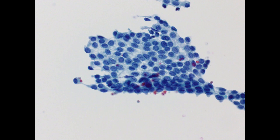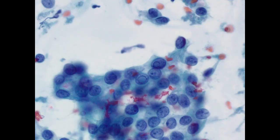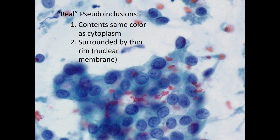On alcohol-fixed smears, we can see the nuclear detail much better and the nuclear features are much more reliable. Here we see elongated nuclei with longitudinal grooves, often described as looking like coffee beans. And here are the famous pseudo-inclusions. They should have contents that are the same color as the cytoplasm and a thin rim of nuclear membrane — these are really just invaginations of nuclear membrane reflecting the increased nuclear contour abnormalities seen in PTC.